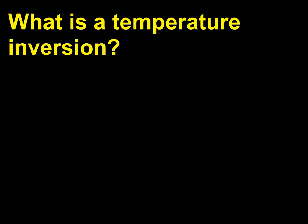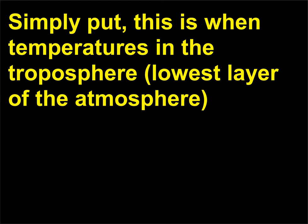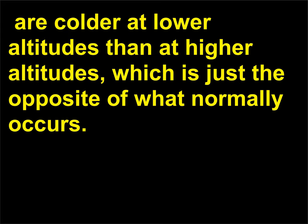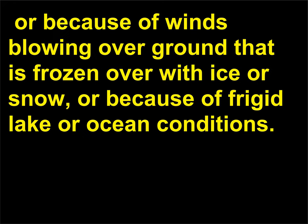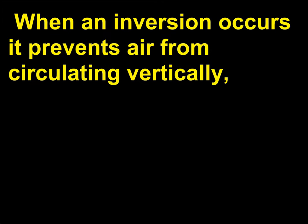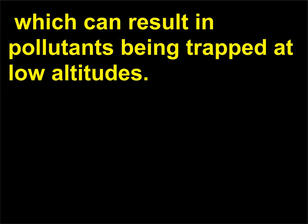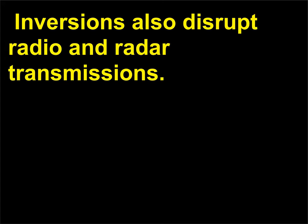What is a temperature inversion? Simply put, this is when temperatures in the troposphere, the lowest layer of the atmosphere, are colder at lower altitudes than at higher altitudes — just the opposite of what normally occurs. Inversions can occur as the result of weather fronts moving through an area, or because of winds blowing over frozen ground, or because of frigid lake or ocean conditions. When an inversion occurs, it prevents air from circulating vertically, which can result in pollutants being trapped at low altitudes. Inversions also disrupt radio and radar transmissions.